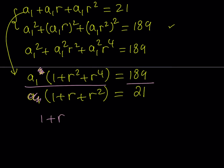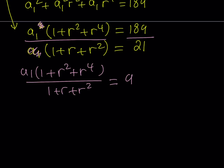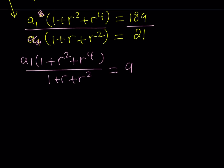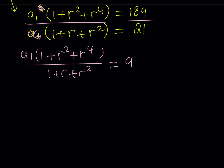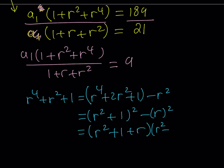Dividing the second equation by the first, one a_1 cancels and 189 divided by 21 gives 9. So we get a_1·(1 + r² + r⁴) divided by (1 + r + r²) equals 9. Now, 1 + r² + r⁴ is factorable — it can be written as r⁴ + 2r² + 1 minus r², which is (r² + 1)² − r², a difference of two squares.